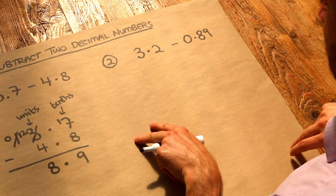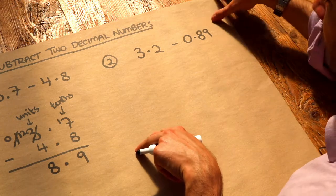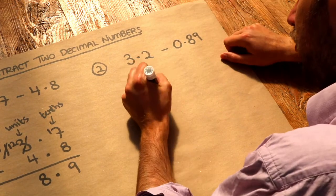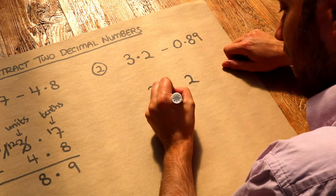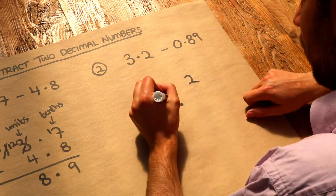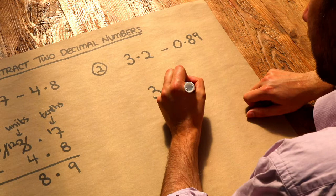Now this one, 3.2 minus 0.89, there's just one extra subtlety here. If we write the numbers such that the decimal points are lined up, we've got 0.89.